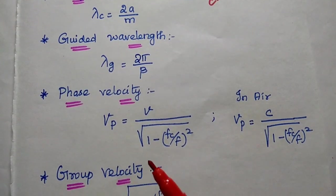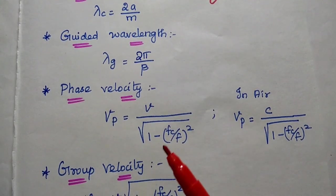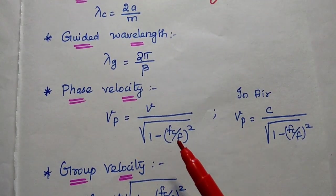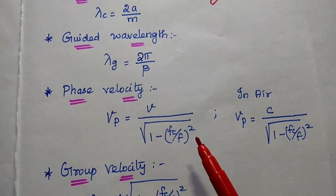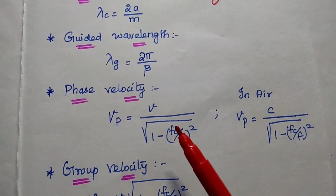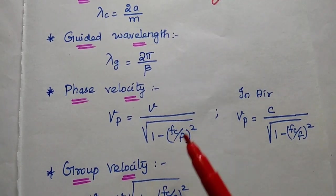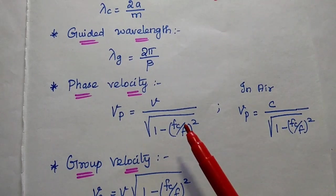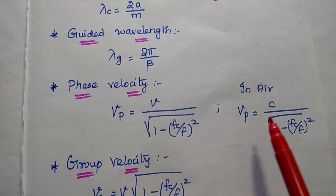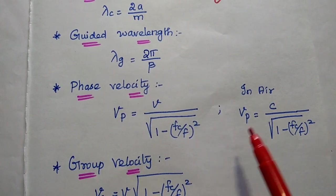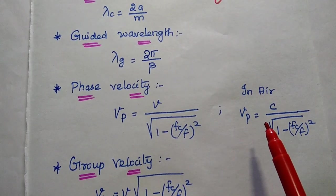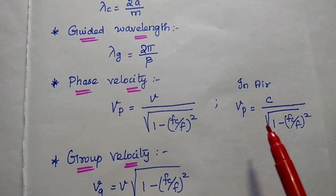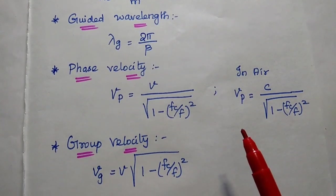The phase velocity vp is equal to v by square root of 1 minus fc by f, the whole square, where v is the velocity of propagation. In air medium, it is represented as the velocity of light c, so phase velocity equals c by square root of 1 minus fc by f, the whole square.